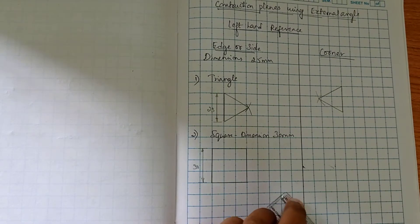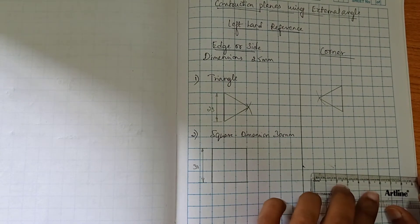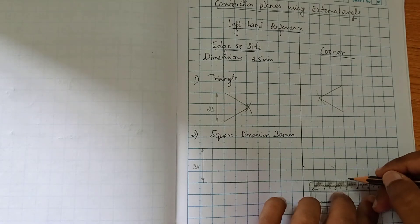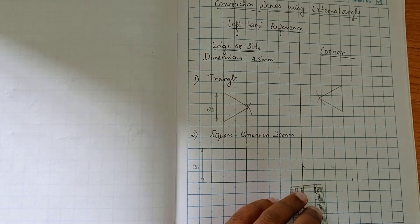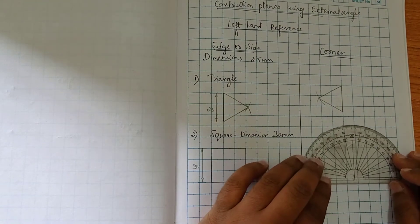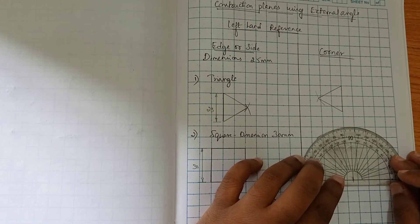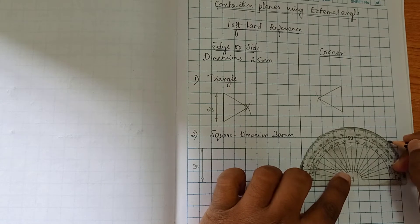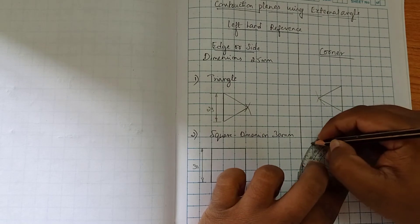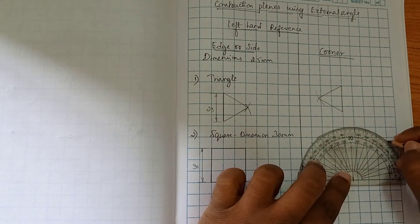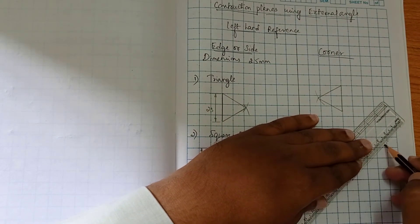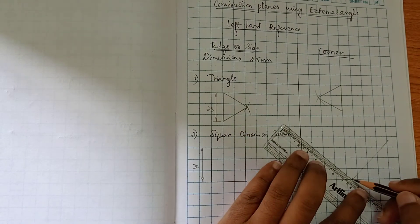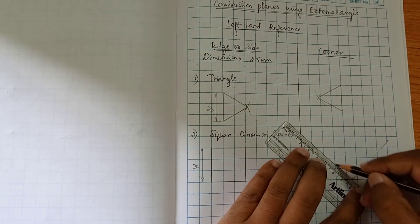Now we have to construct the square with respect to corner. First we have to take one dry line and take a reference point. From this reference point you should mark 45 degrees on both sides. Mark 45 degrees on both sides. To those points, draw a straight line.